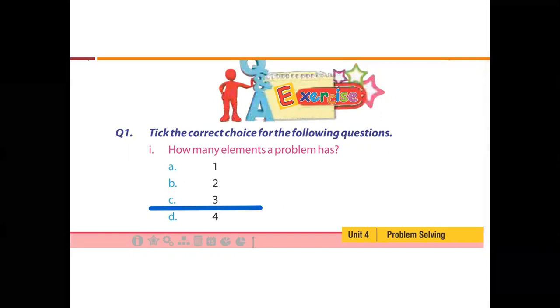Part number 1 is: how many elements does a problem have? Students, we have discussed this topic. There are 3 elements of a problem. So option C is the right option. Mark this question.